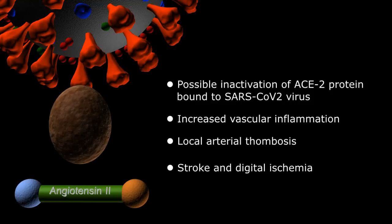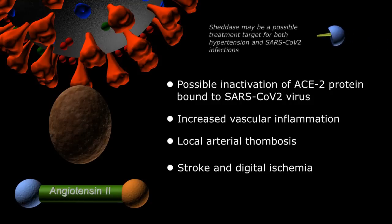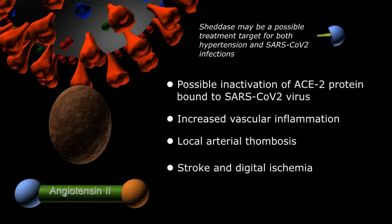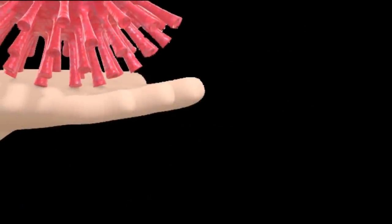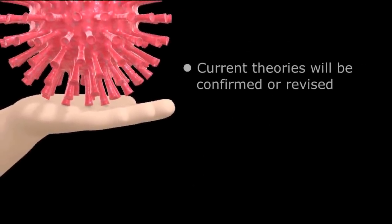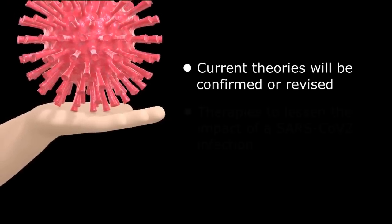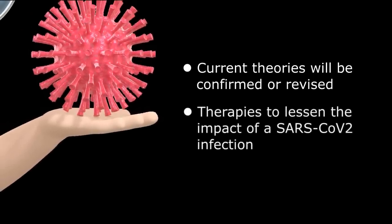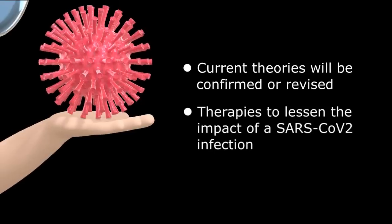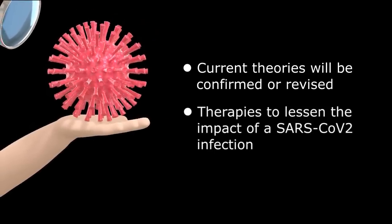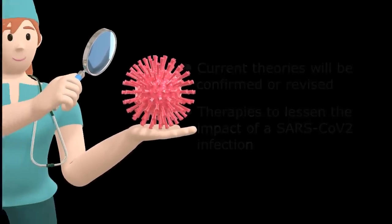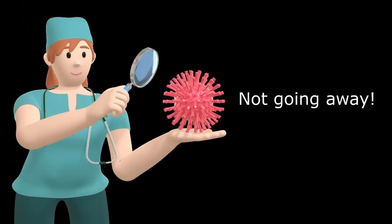If this all turns out to be true, exogenous shedase enzyme may be a powerful medication in the treatment of both hypertension and a SARS-CoV-2 infection. As we learn more about the virus every day, some of these theories will be confirmed or revised, and more importantly, from this information, we will develop effective therapies to mitigate the clinical impact of a SARS-CoV-2 infection. As we relax some of the shelter-in-place mandates across the country, it's important to remember that the coronavirus is not going away, and we need to continue to be socially responsible as we reopen businesses and places of gathering.